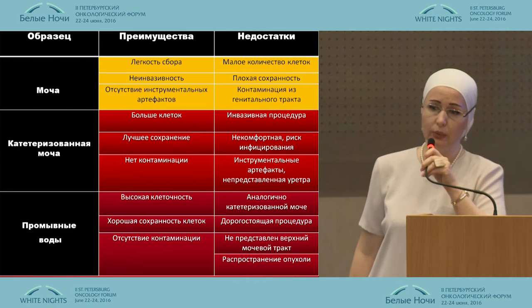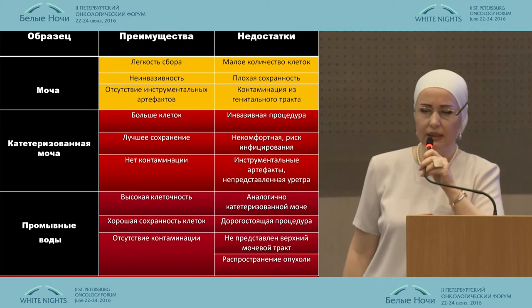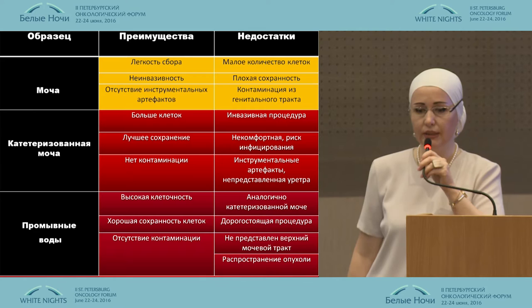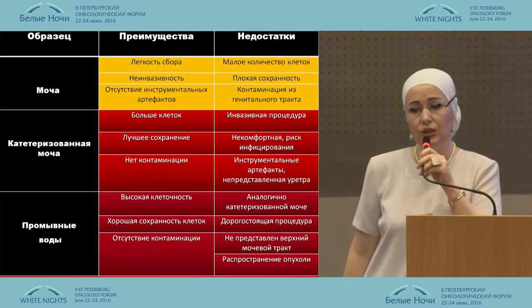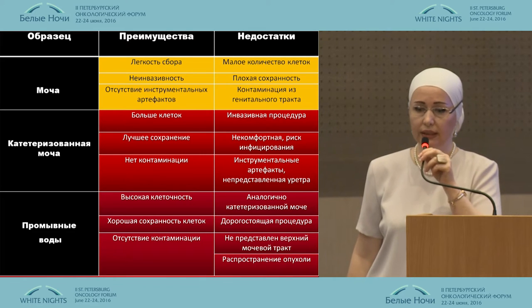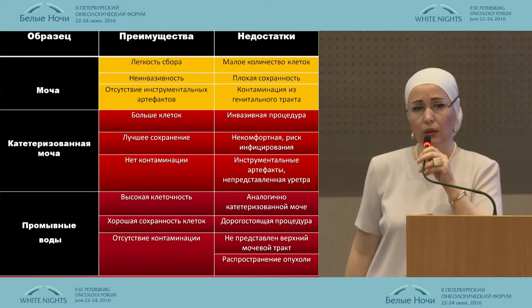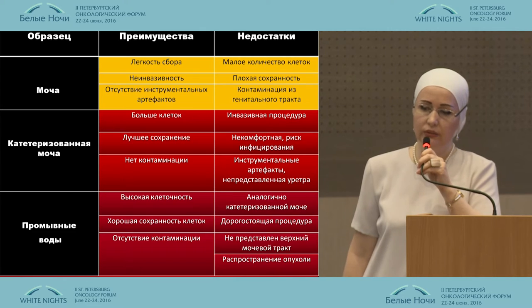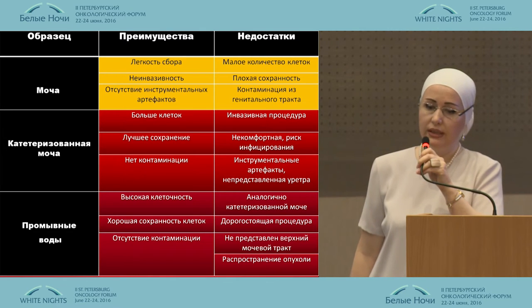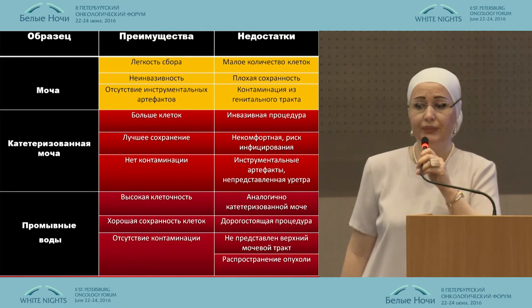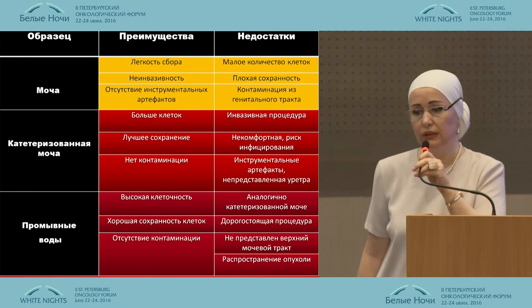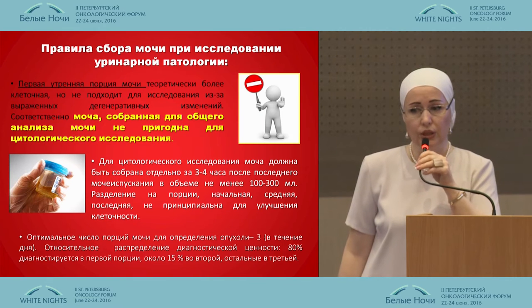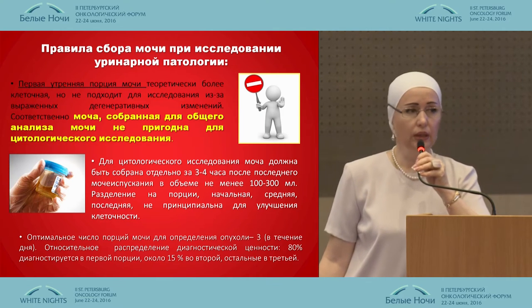For example, the most accessible is the urine, but it has certain disadvantages. Then catheterized urine and the wash waters — there are cells of interest there, but at the same time this is an expensive procedure and there can be artifacts at the collecting of the material.